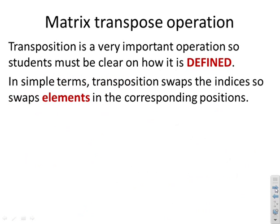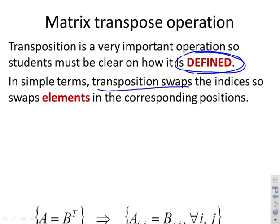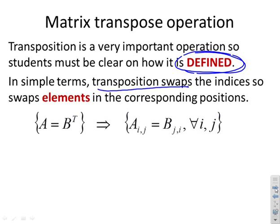Matrix transpose: transposition is an important operation, but it is a definition that students need to recognise and memorise. In simple terms, transposition just swaps the indices, so i,j becomes j,i. If A equals B transposed, that's the same as saying A_ij = B_ji for all i, j.